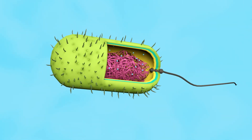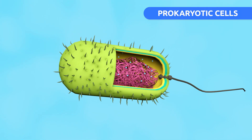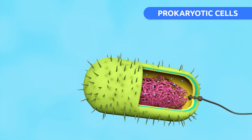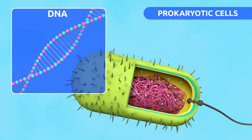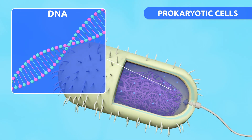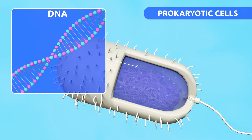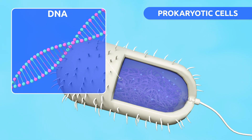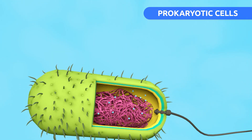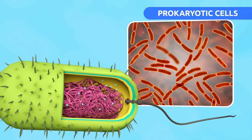The main characteristic of prokaryotic cells is that DNA, the genetic material, is floating in the cytoplasm instead of being stored in the nucleus. Bacteria are prokaryotic cells.